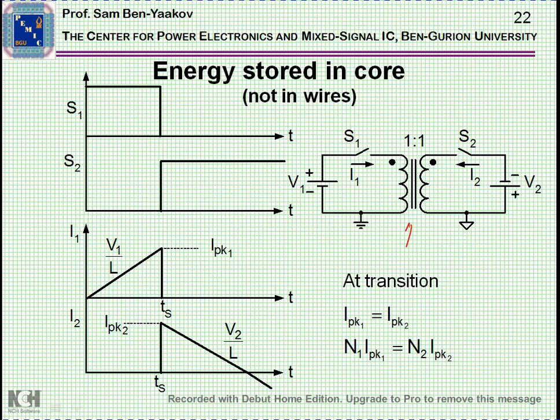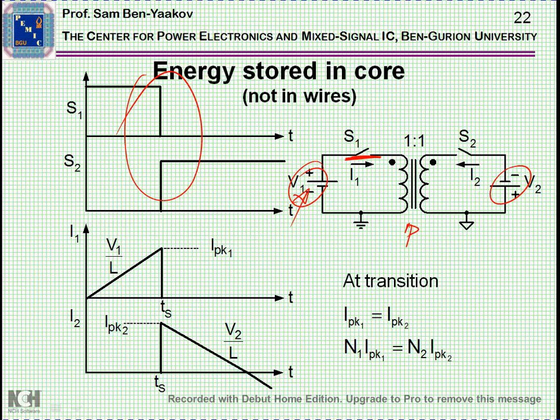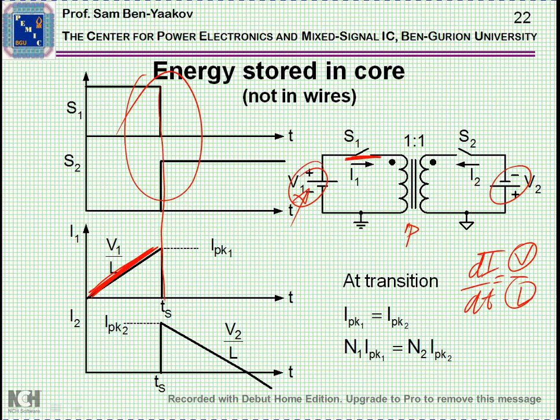In the case of a coupled inductor which will be connected to two voltages, and here is the same switching arrangement, when V1 is connected, current will go up linearly, because dI/dt is V over L. V is constant, L is constant, so you'll have a constant slope here. There is an interruption here in terms of the switches changing, S1 is open and then S2 is conducting, and consequently the current, if this is one-to-one, the peak current will be exactly the same, and the current will now go down.